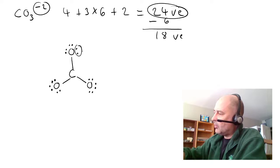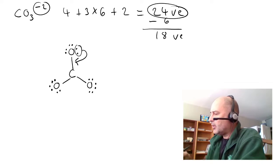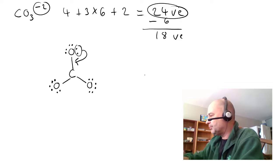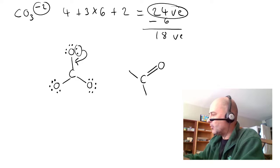So, you want to move one of these lone pairs to make a double bond. And it doesn't matter which one you use. Okay, I rotated that a little bit, but it doesn't matter.